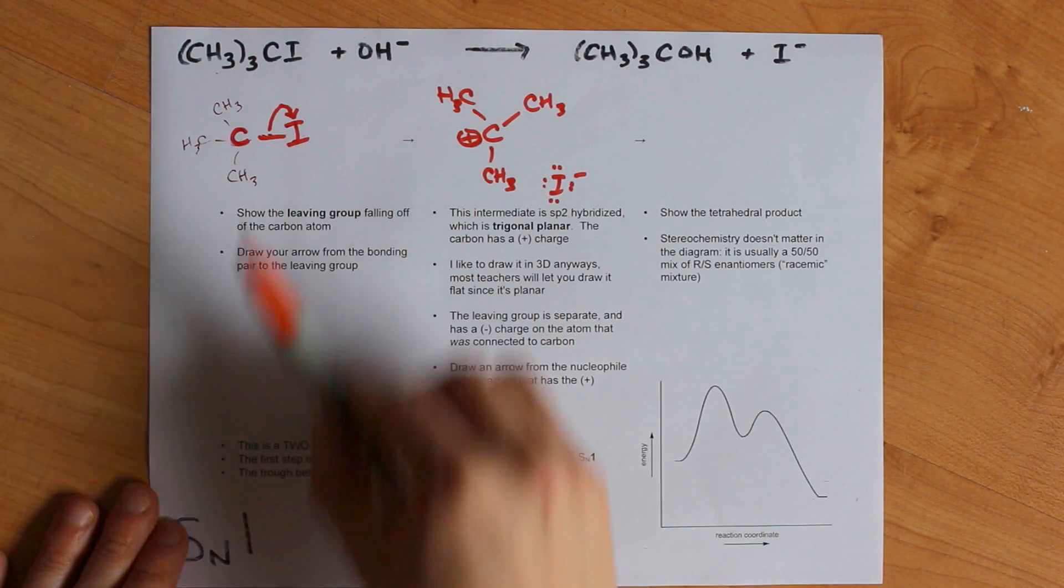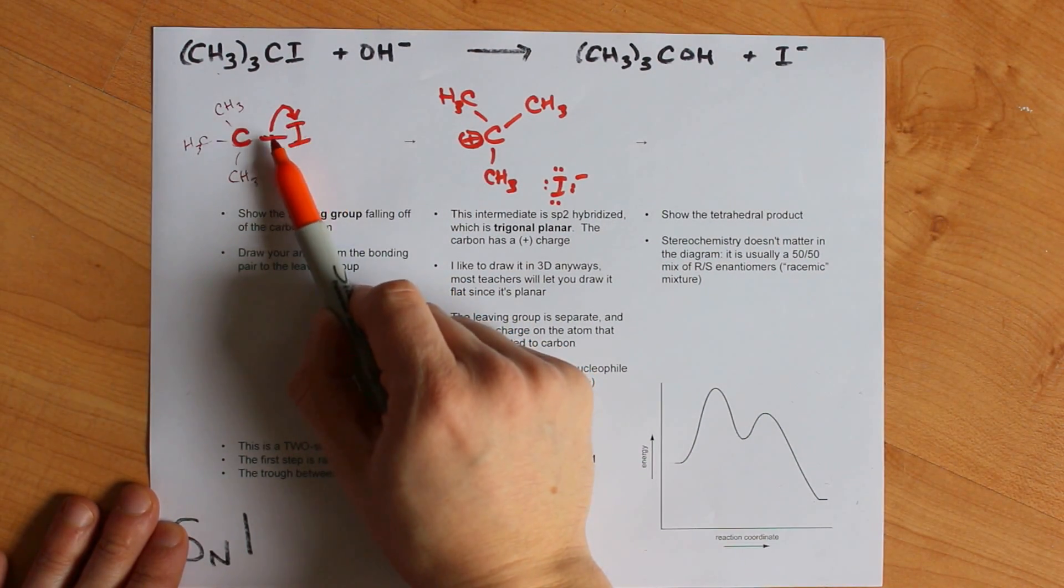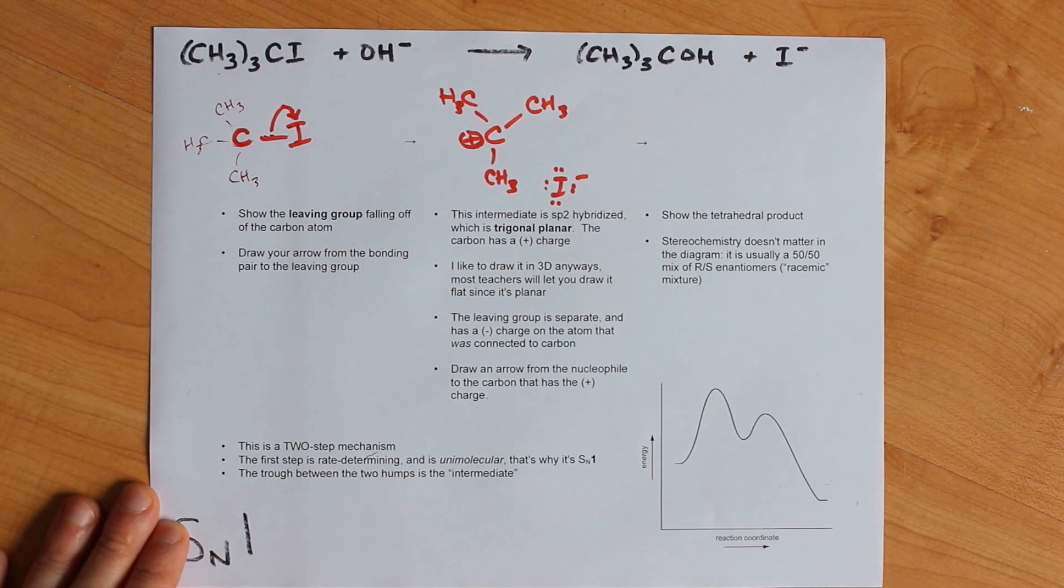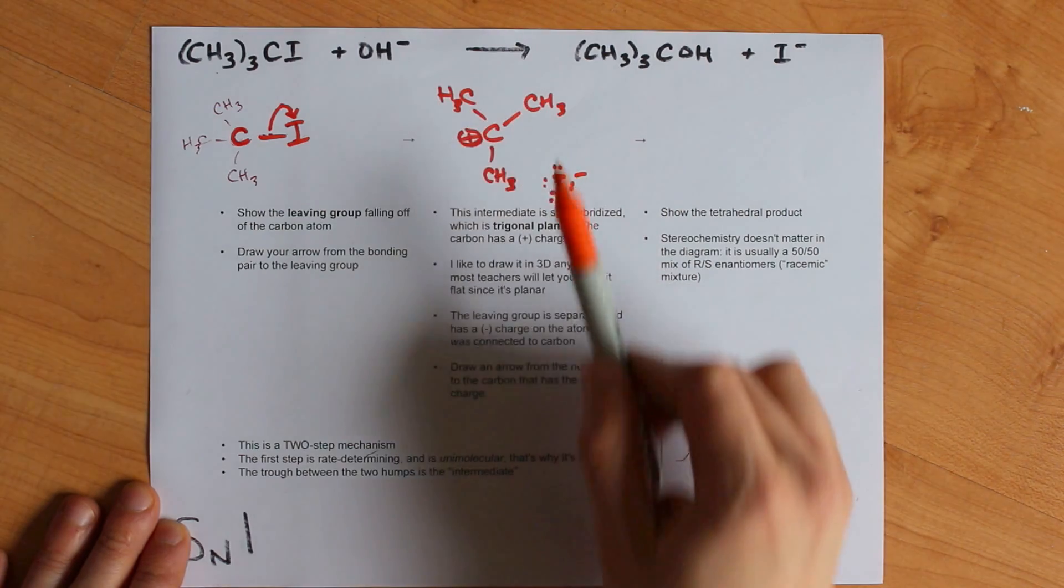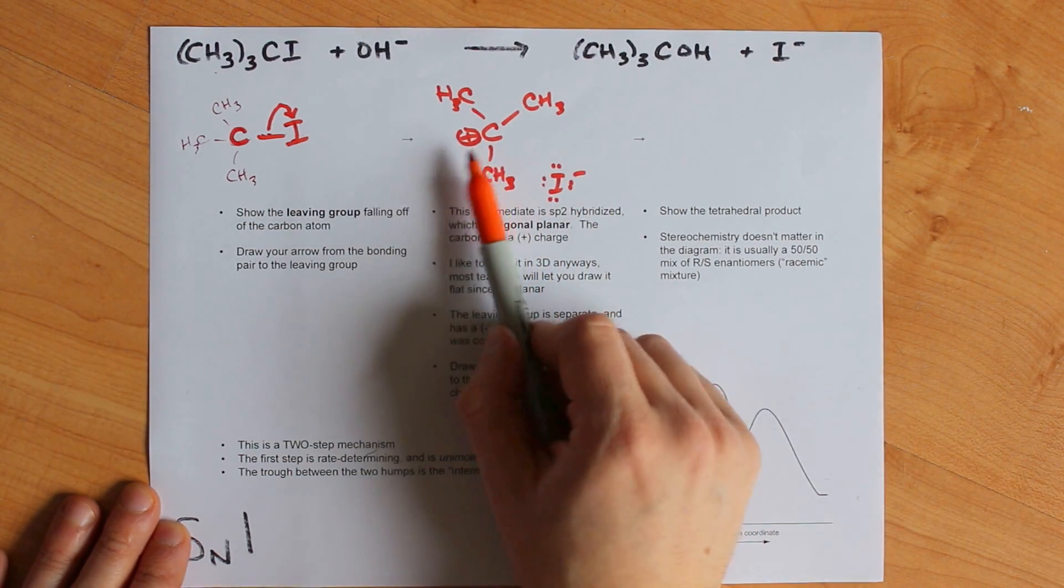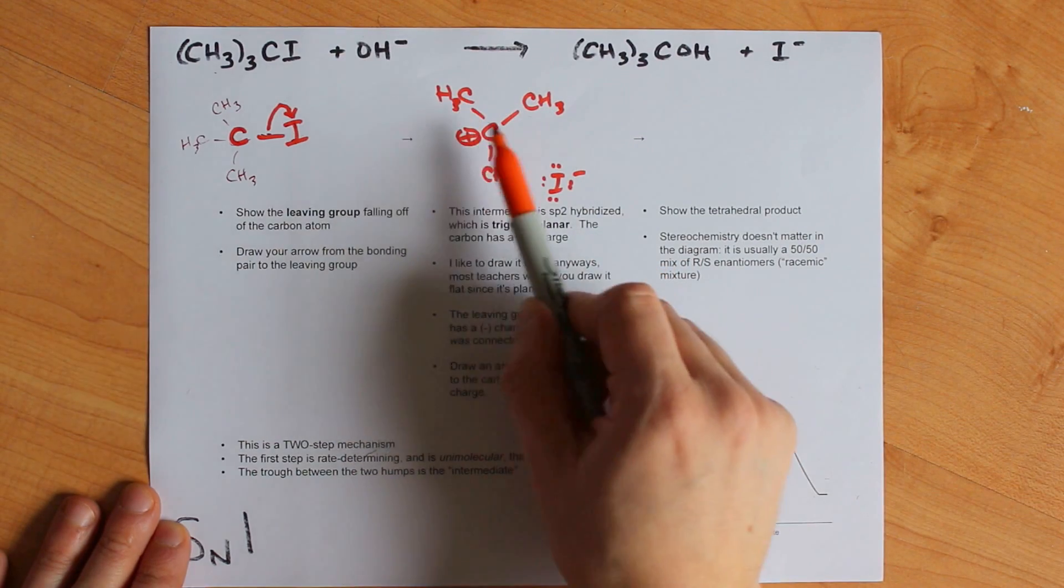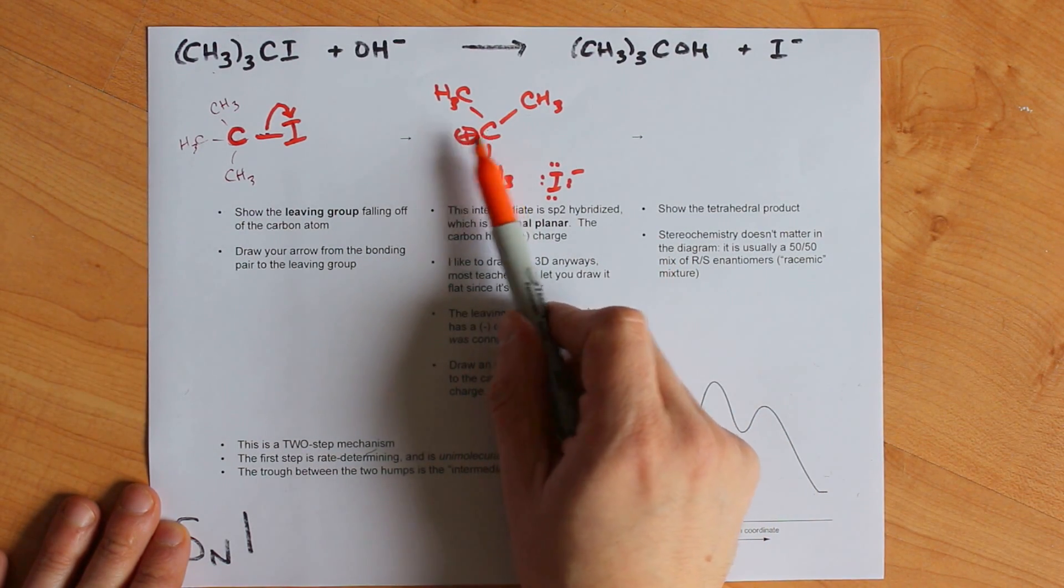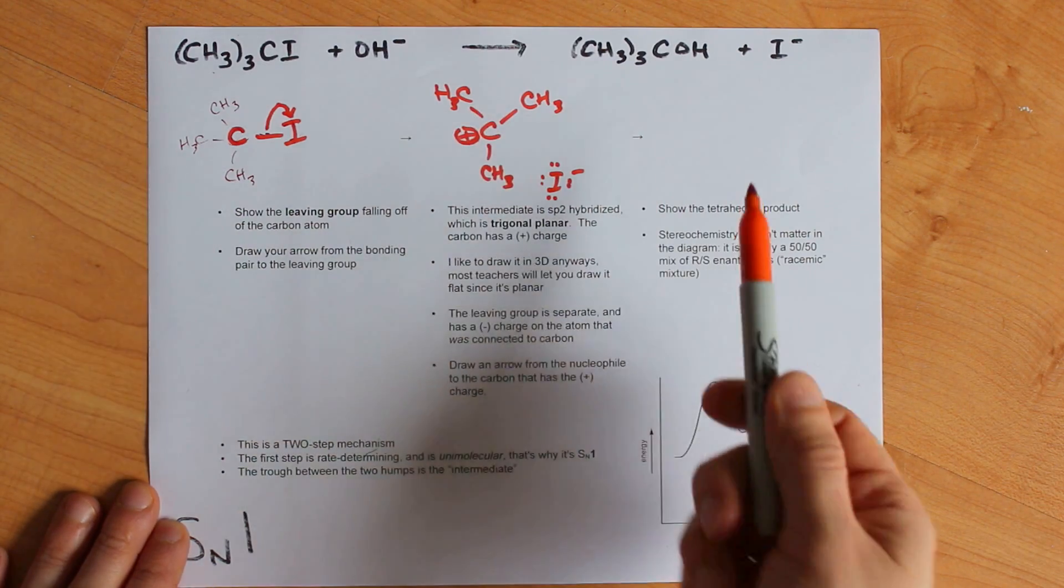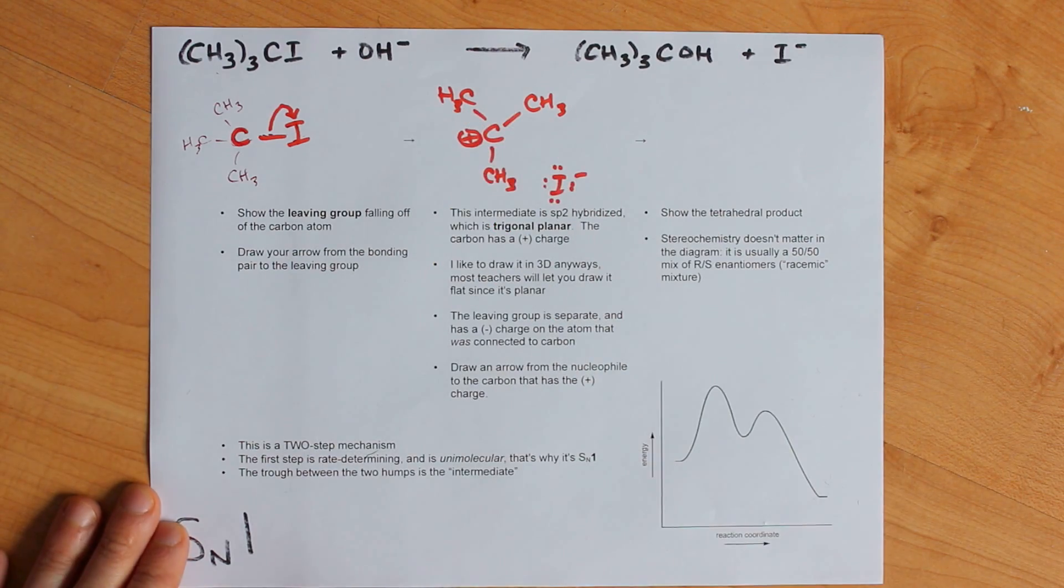Now, important things to show for the SN1 reaction include the leaving group falling off the carbon atom. It's taking both the electrons, so we use a double-headed arrow. And then here, we like showing that the intermediate is trigonal planar. This carbon is attached to three groups. It does not have an electron in its 2p orbital, or the 2pz orbital. And so all of these bond angles are 120 degrees.